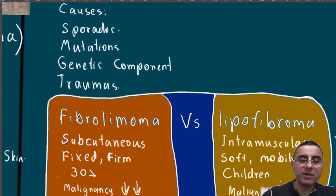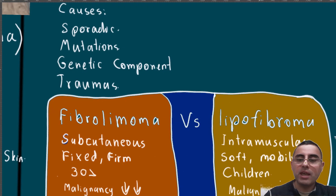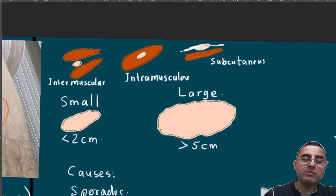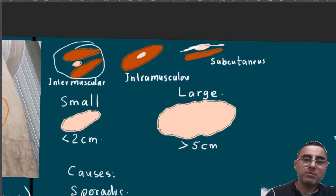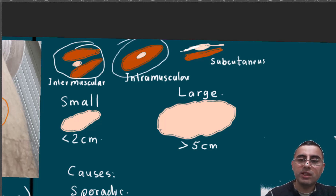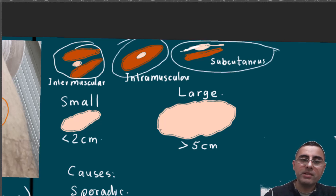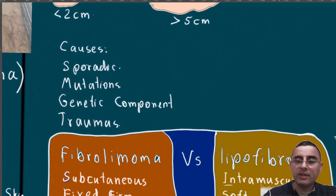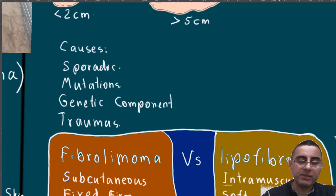Fibrolipoma is usually subcutaneous, while lipofibroma is commonly intramuscular or intermuscular. You can see here the locations: intermuscular position, intramuscular position, and subcutaneous position. So fibrolipoma is usually subcutaneous, while lipofibroma can be intramuscular and intermuscular.